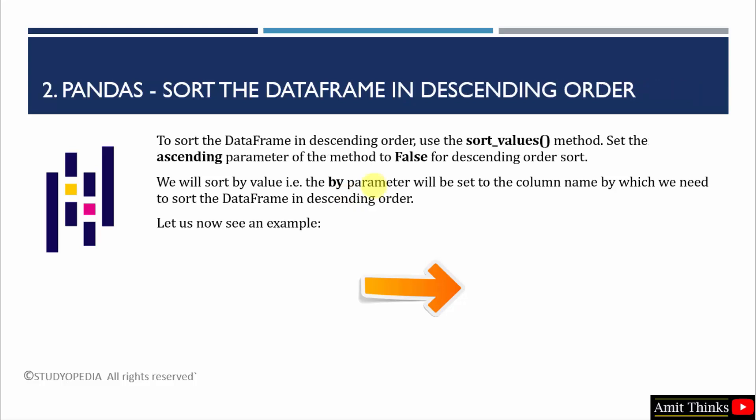Let us see the next example in which we will sort the pandas DataFrame in descending order. What we will do is set the 'ascending' parameter to False, which means the opposite — descending order. The same 'by' parameter will be used to sort according to a specific column, just like in the last example.